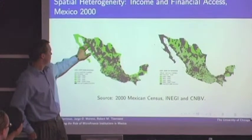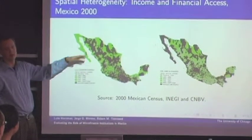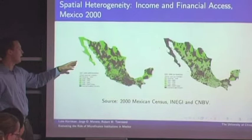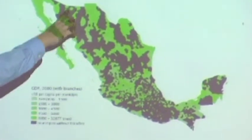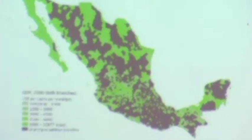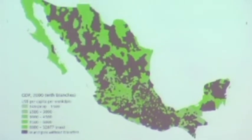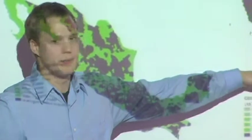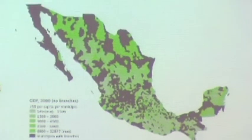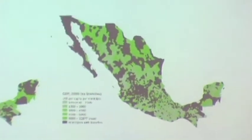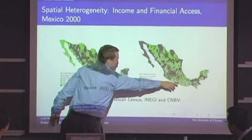This map — focus on the left-hand one first. The areas in green are the municipalities in Mexico where there are branches of commercial banks. The dark gray and black areas have no access to commercial banks at all — not just that it's hard to get a loan, but there are simply no commercial banks. The right-hand map is the same thing but inverted: dark gray shows areas with banks, and the green areas without banks are shaded darker to indicate higher GDP per capita. You can see generally higher levels in the north than in southern Mexico, where there are no bank branches.